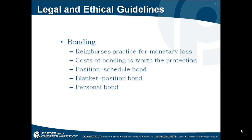There are three types of bonds. A position schedule bond covers the position rather than a specific individual — for instance, the bookkeeper, office manager, and receptionist might be covered. A blanket position bond covers all employees; it works well when staff members share duties or cover for one another during absences. A personal bond is designed to cover a specific individual by name and generally requires a personal background investigation.